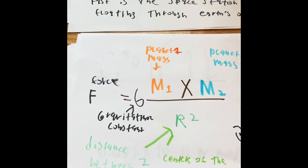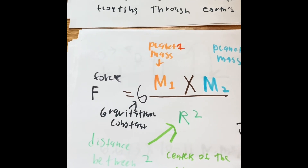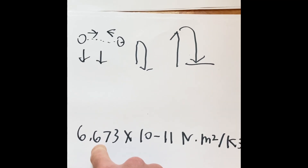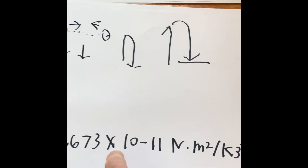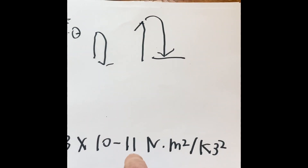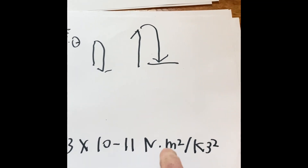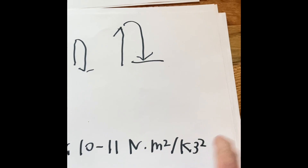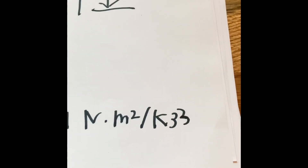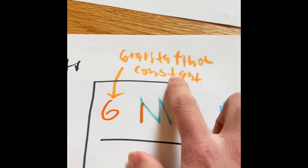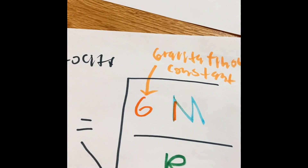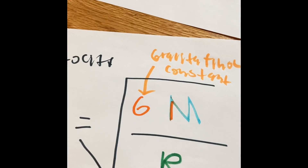The number we use for the gravitational constant is 6.673 multiplied by 10 to the negative 11th power, in units of N·m² per kg². We use that number and plug it into the gravitational constant, which measures the gravity and forces between two planets.